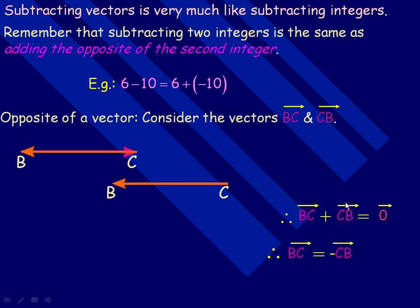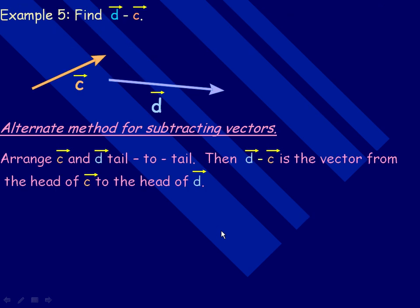If we rearrange this algebraically and subtract the CB from both sides, we get BC is equal to the negative of CB, which means that they're opposites. So BC and CB are opposite vectors. They're parallel, same length, but exactly in the opposite direction. And we'll use this idea in order to subtract vectors.